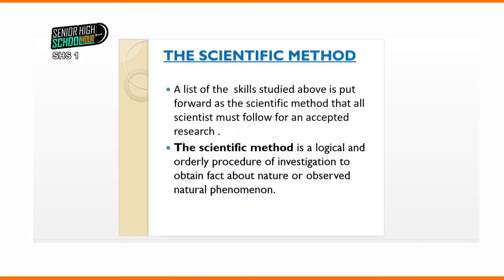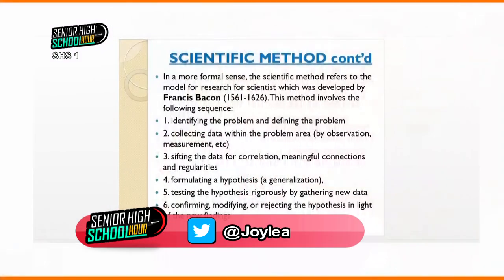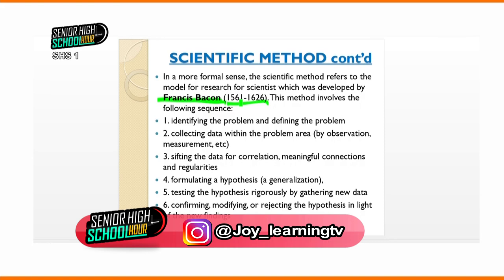The many skills I mentioned — some are put together to form what we call the scientific method. The skill is different from the scientific method. At our SHS level, the scientific method consists of six things: observe and identify problems, define problems, make a hypothesis, put the hypothesis into an experiment, record your findings, then analyze and conclude. These are the six steps that form a scientific method. The person who developed it is called Francis Bacon.